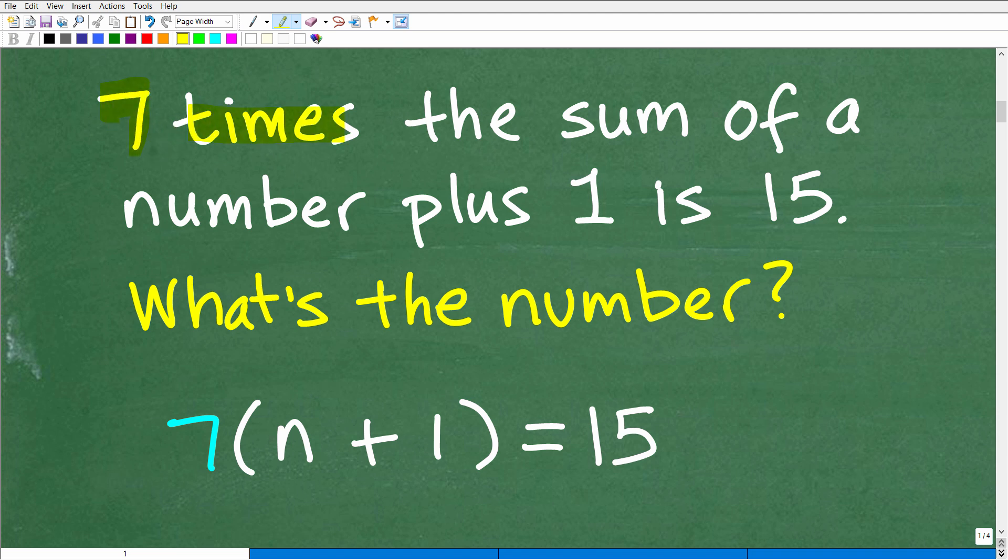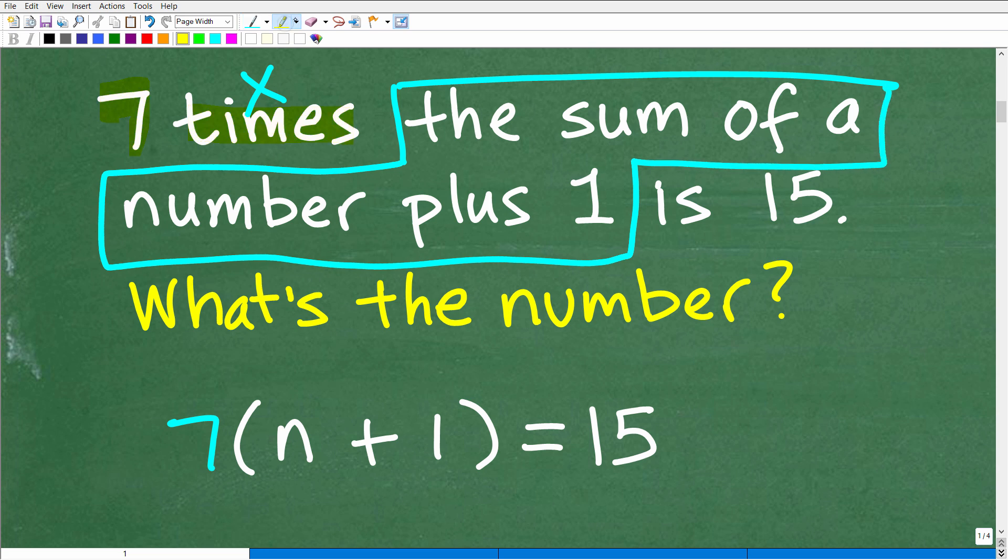So here we have seven times. Okay, so that means what? Well, it means seven times is we're talking about multiplication. So we're going to take seven. We're going to multiply it by something. Now, here is probably the part of the problem where a lot of students get confused. So this is seven times the sum, the sum of a number plus one. Okay, so this part or understanding this part of the problem is essential.